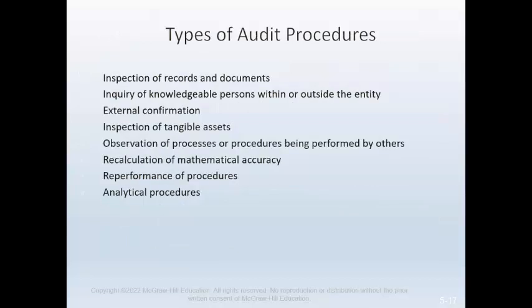The auditors perform a variety of audit procedures to obtain audit evidence. Perhaps the most widely used is inspection of records and documents; auditors evaluate documentary evidence for reliability in case documents are forged or created by a dishonest employee — documentary evidence created outside the client organization and transmitted directly to the auditor is more reliable. Inquiry of knowledgeable persons and representation letters are also important procedures. Specialists are used when auditors need to consult with experts. External confirmation of accounts such as cash and accounts receivable, inspection of tangible assets, observation of processes, recalculation, and re-performance are also widely used.